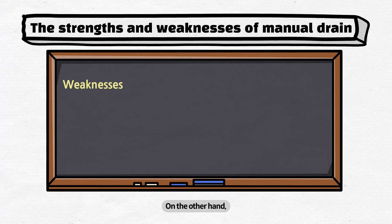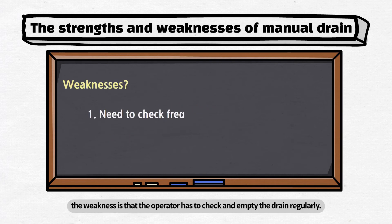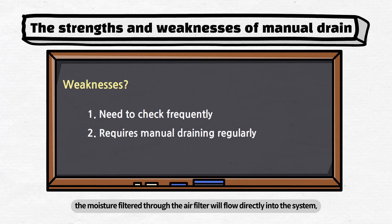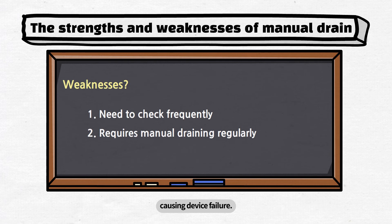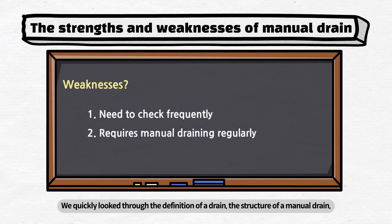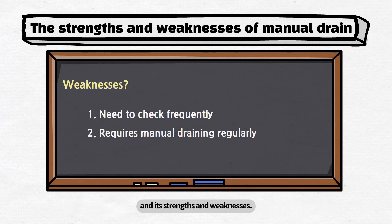On the other hand, the weakness is that the operator has to check and empty the drain regularly. If a large amount of moisture accumulates inside, the moisture filtered through the air filter will flow directly into the system, causing device failure. That's it for today. We quickly looked through the definition of a drain, the structure of a manual drain, and its strengths and weaknesses.